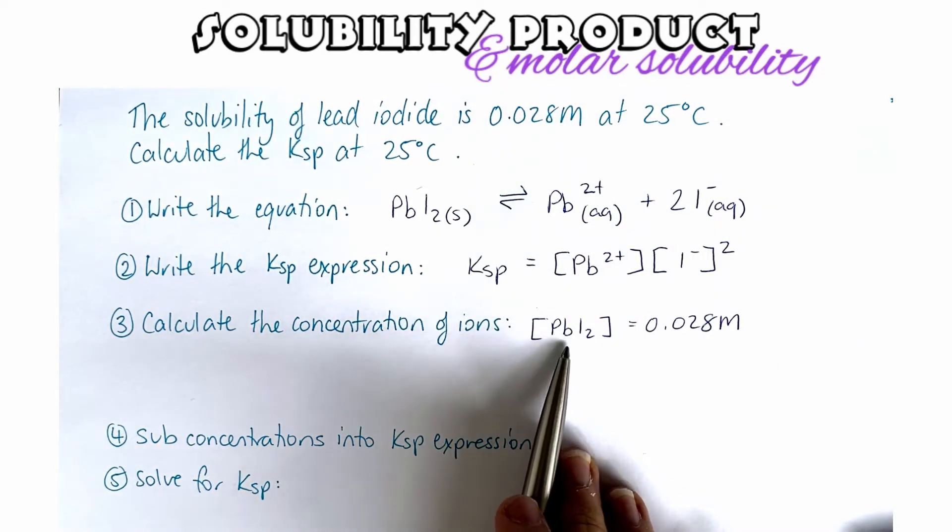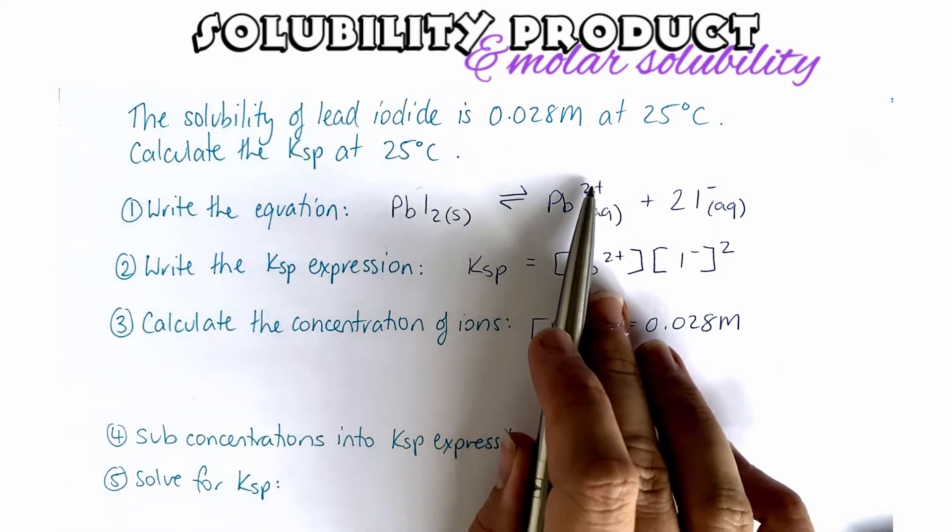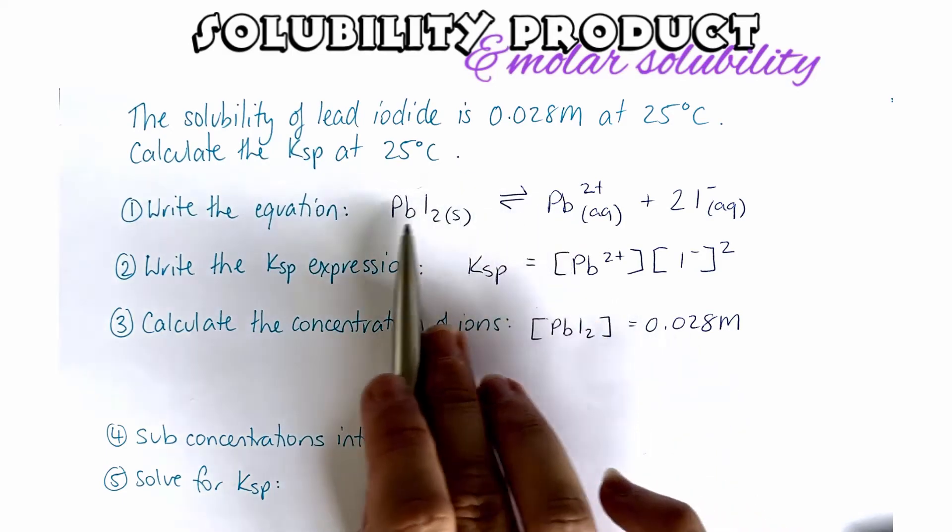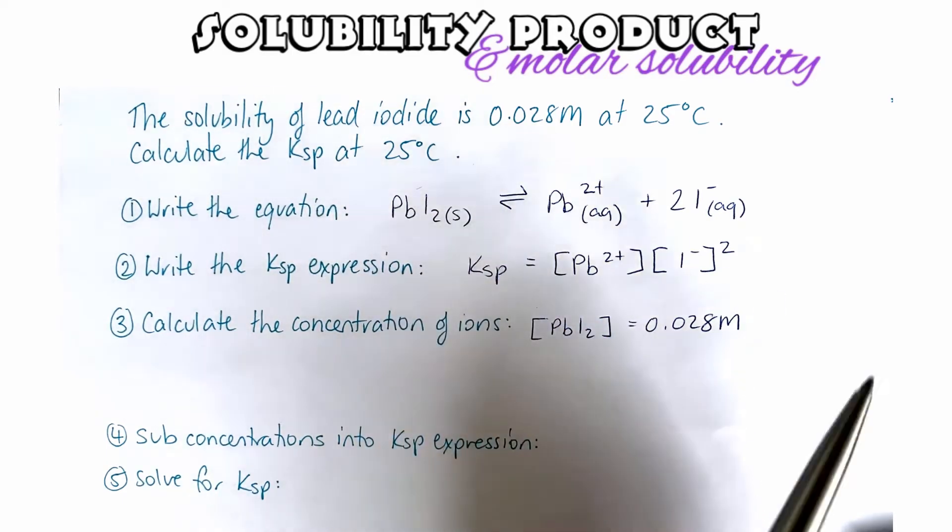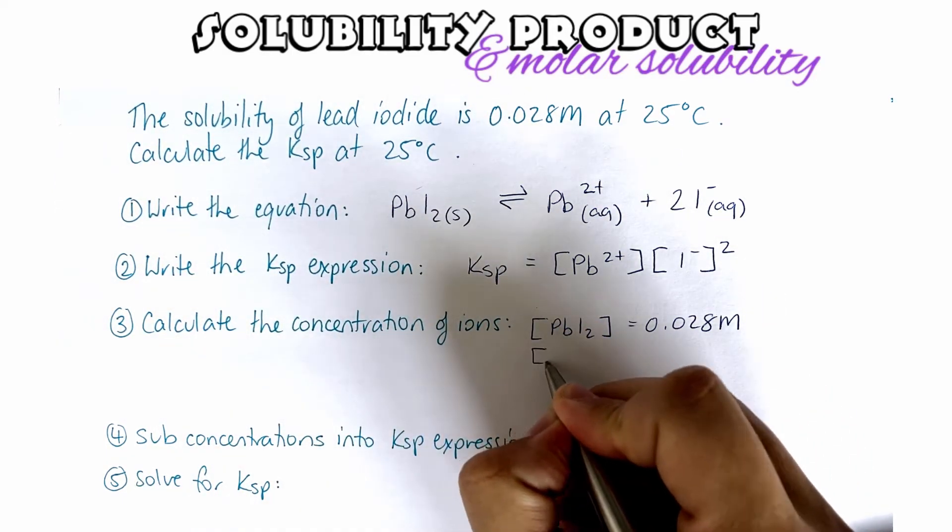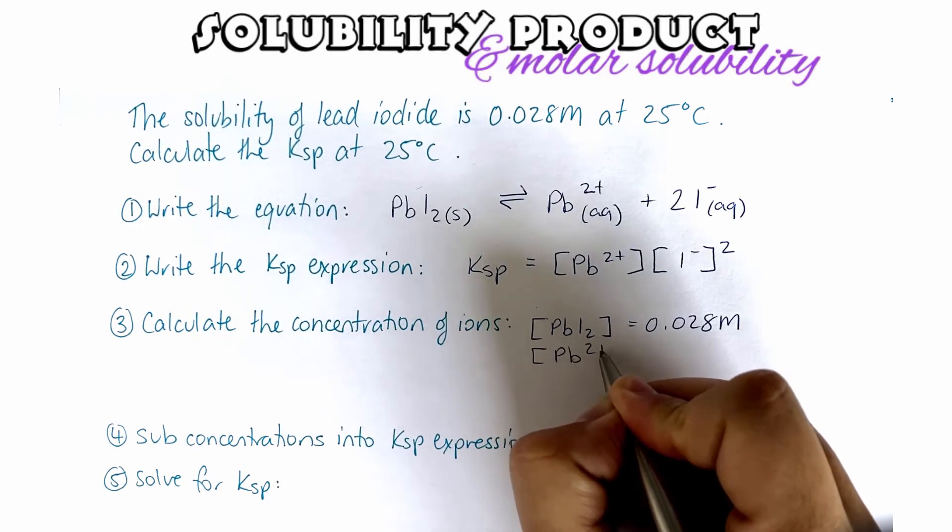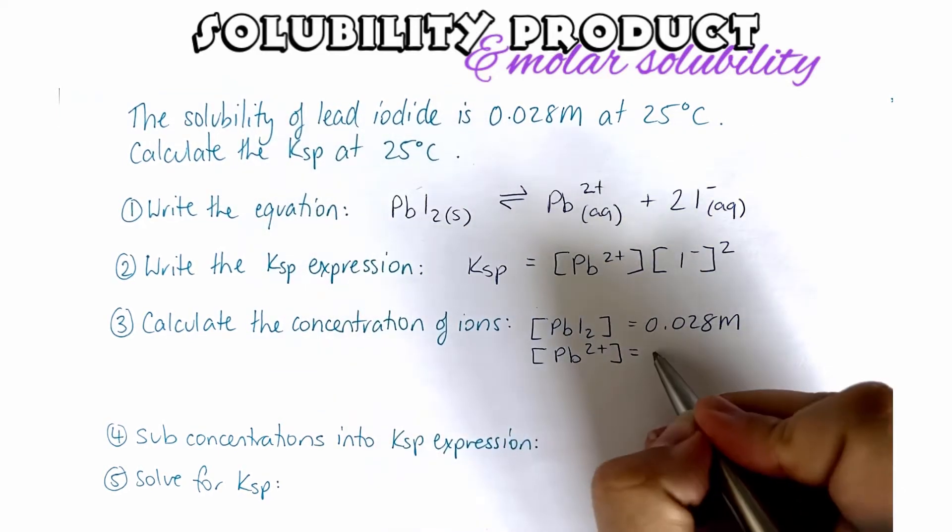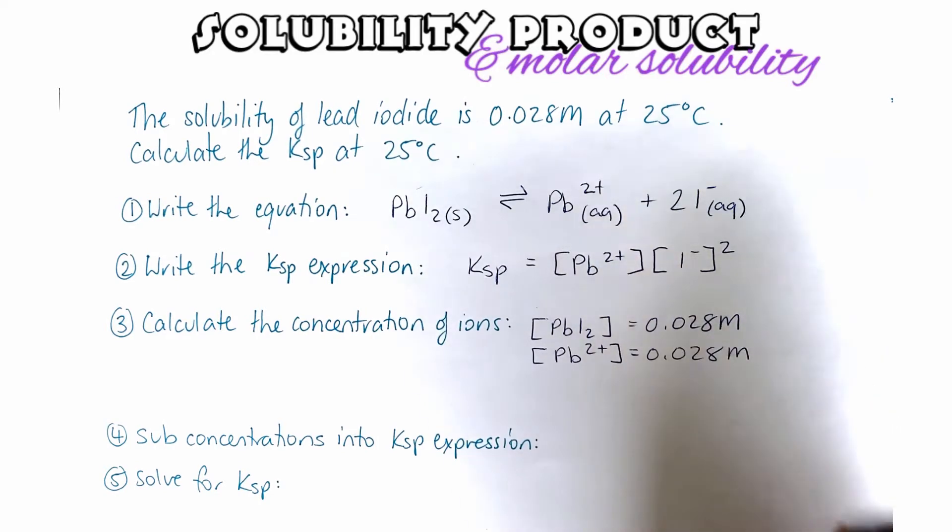Now the molar ratio between that and our lead ions in solution is 1 to 1. So that means that we can also safely say that our concentration of our lead ions in solution is going to be 0.028 as well.